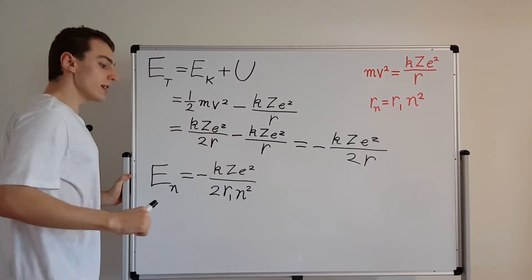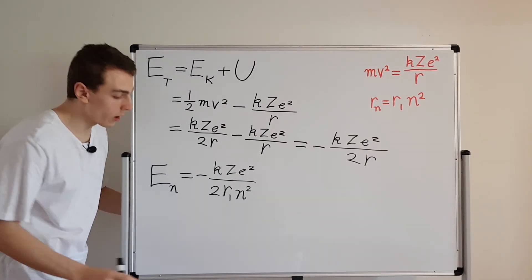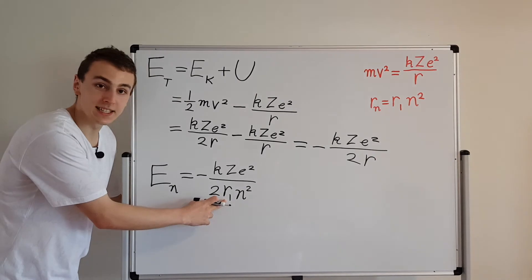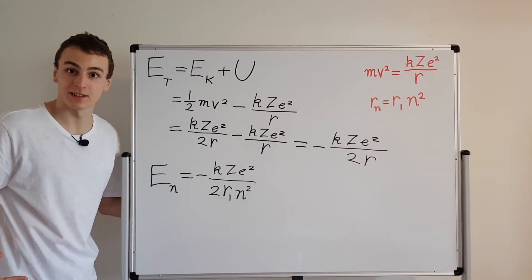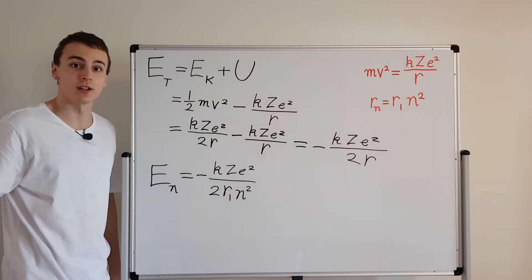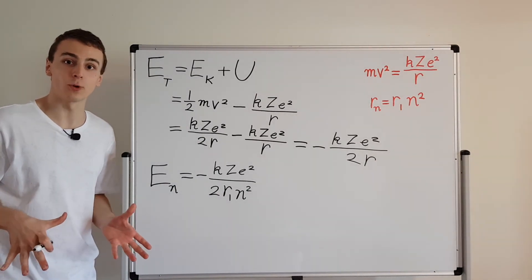Now if we're dealing with hydrogen, the Z is going to be equal to 1. And inside this expression for r1, there's actually a Z. And if you set Z equal to 1, you get the Bohr radius. And this was actually going to turn into the Bohr radius if you're dealing with hydrogen. But I'm going to keep this general so it works for other elements as well.